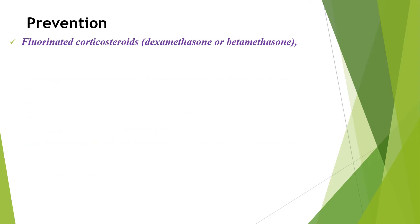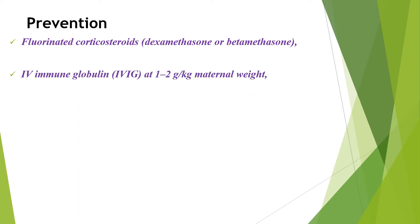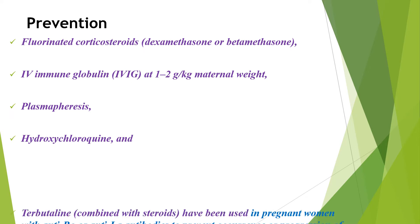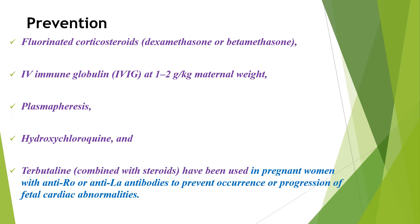Regarding prevention, fluorinated corticosteroids such as dexamethasone or betamethasone, IV immunoglobulin, plasmapheresis, hydroxychloroquine, and terbutaline combined with steroids have been used in pregnant women with anti-Ro or anti-La antibodies to prevent occurrence or progression of fetal cardiac abnormalities.